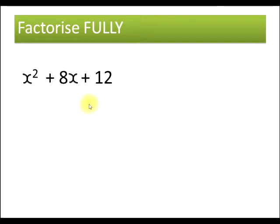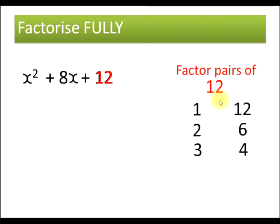Now, we're going to start it very similar. We'll always look at the constant term, and we're going to write down the factor pairs of that number, and then we look to see which of these factor pairs we need to make this coefficient of x.